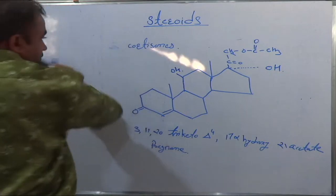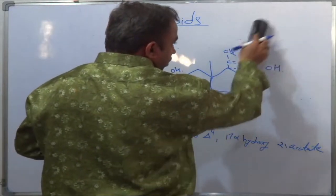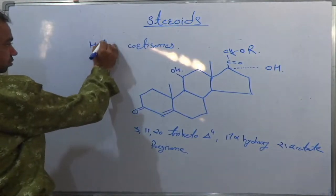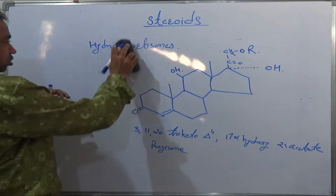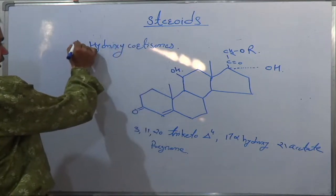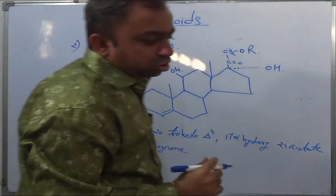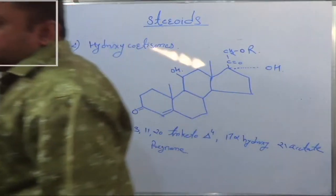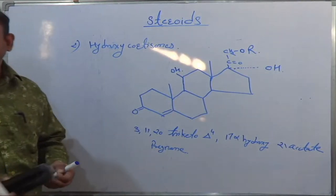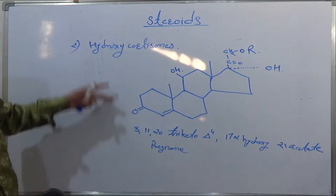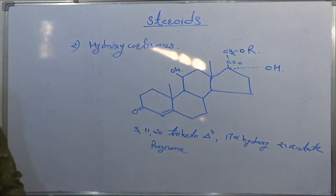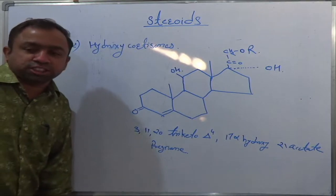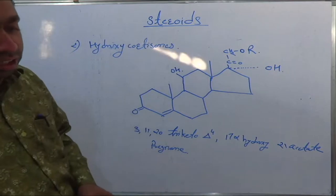This is known as hydrocortisone. You can see different examples: hydrocortisone, hydrocortisone acetate, hydrocortisone cypionate, hydrocortisone sodium phosphate, hydrocortisone sodium succinate. So we have four examples here. Write down this structure in your notebook — it will benefit you.